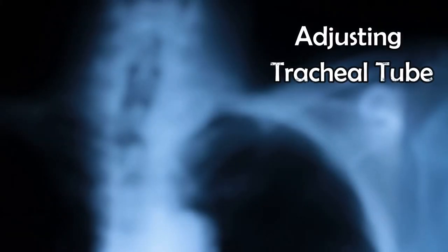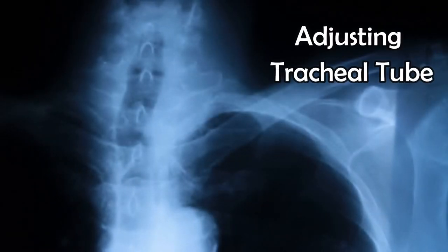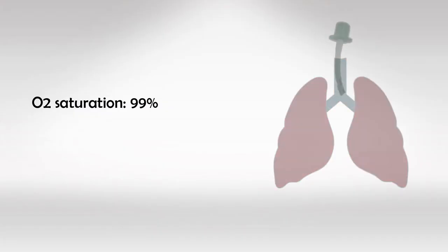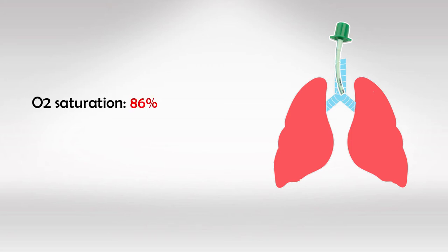Welcome back. In this video we'll talk about adjusting the tracheal tube in mechanical ventilation. When the patient is intubated for ventilation, we place the tube in the common bronchus, and sometimes all of a sudden the patient starts desating. A very common cause is tube shifting, as the tube shifts into the right or left bronchus instead of the common bronchus.